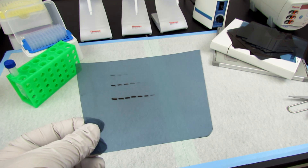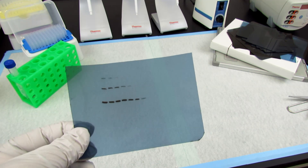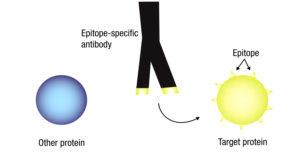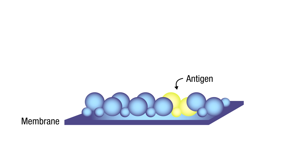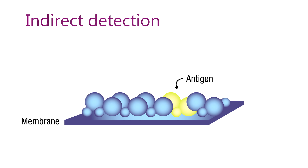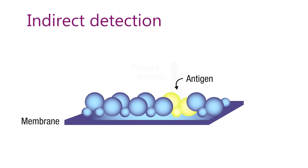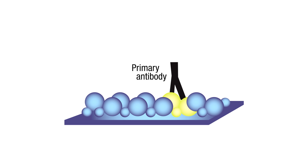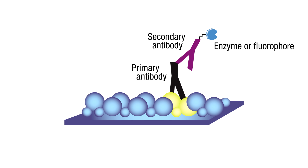Western blot analysis is a powerful method of detection because antibodies that target specific protein epitopes are used to probe for your proteins of interest. The most common Western blot strategy to detect specific proteins is indirect detection, in which the target-specific antibody, called the primary antibody, binds to the protein of interest, and then a second antibody labeled with a detectable enzyme or fluorophore binds to the primary antibody.